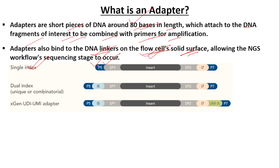There can be different kinds of adapters — for example, single index adapters, dual index adapters, or UDI/UMI adapters. So what do these different parts of these adapters mean, and what are their functions?